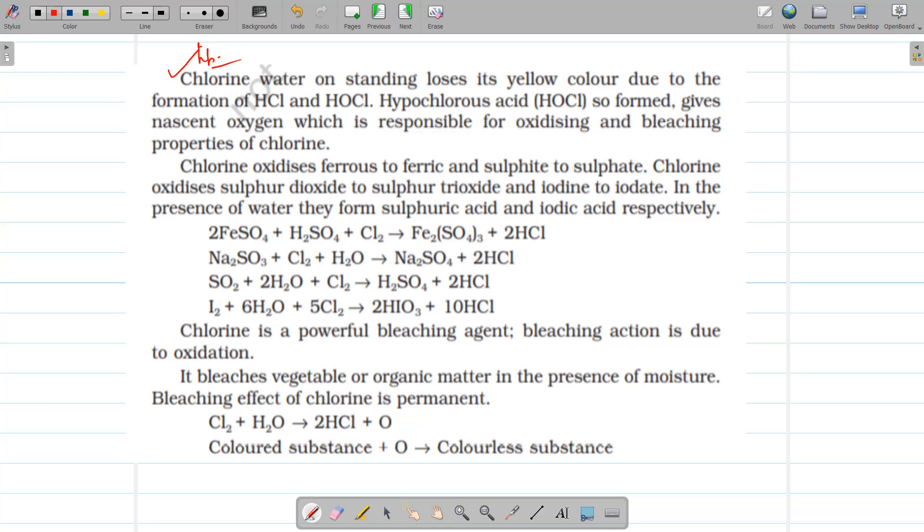Then, this is also very important thing. That is, chlorine water on standing loses its yellow color due to the formation of HCl and HOCl. That is, hypochlorous acid. And this hypochlorous acid, it dissociates to form HCl and nascent oxygen. And this nascent oxygen is responsible for its bleaching action. It is a powerful bleaching agent due to oxidation. As it is due to oxidation, so it is permanent. So it bleaches vegetable or organic matter to colorless substance.